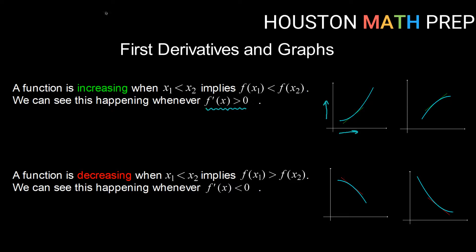The opposite implies decreasing. A function is decreasing whenever x1 less than x2 implies that f(x1) is greater than f(x2). Or as we move from left to right, the y values are coming down. No matter where we draw a tangent line along a decreasing interval, the slope is negative — f'(x) less than zero. So based upon the first derivative, we can tell if the function is increasing or decreasing on any given interval.